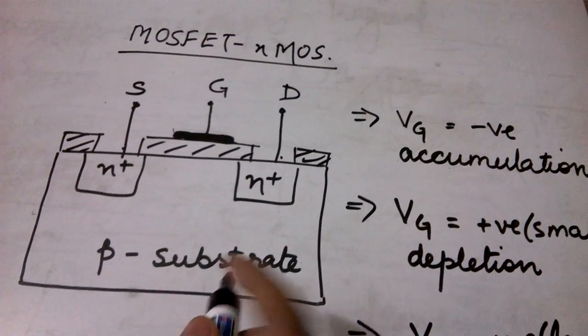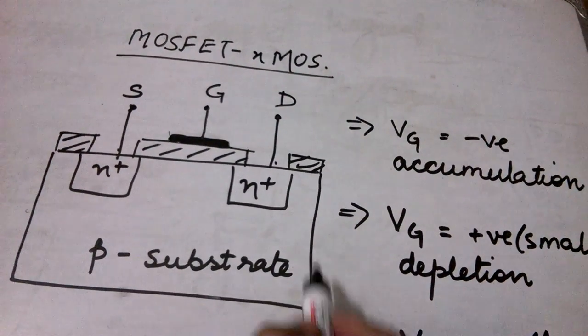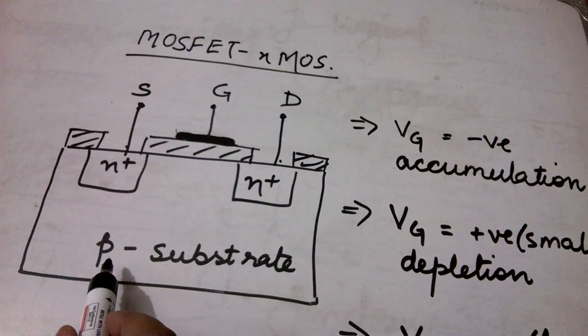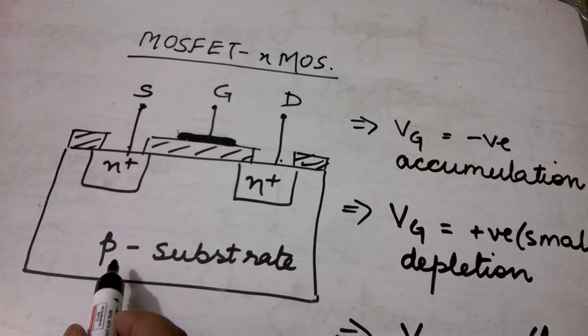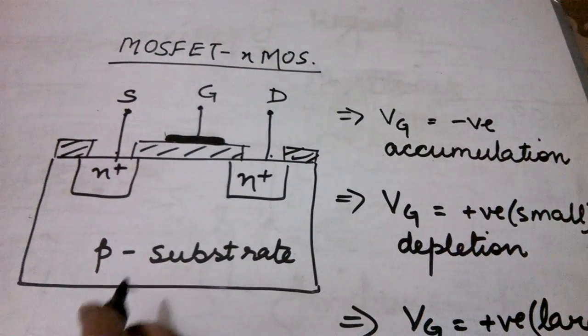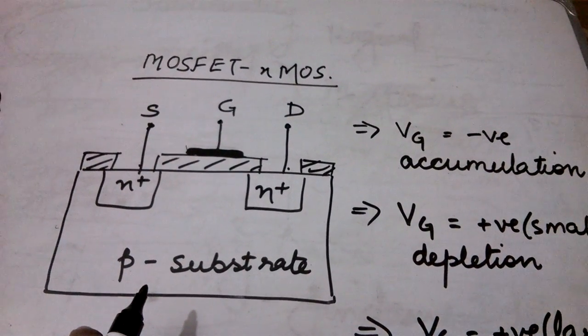Now as you can see in the structure this is the P-type substrate. P-type material means there will be a majority of holes in this particular substrate. And here I have done the doping of N-plus material that is a heavily doped N-type material.